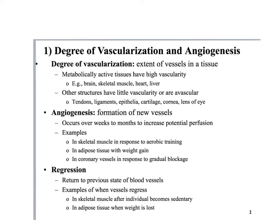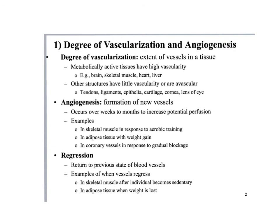Blood vessels are mainly stagnant — if you go through life without influencing an increase or regression in their formation, they tend not to go away. But there are times where you will create new blood vessels: when you get a cut or an injury, you'll create new blood vessels and clear out the damaged ones. There are also times where blood vessels will regress. The formation of new blood vessels is called angiogenesis.